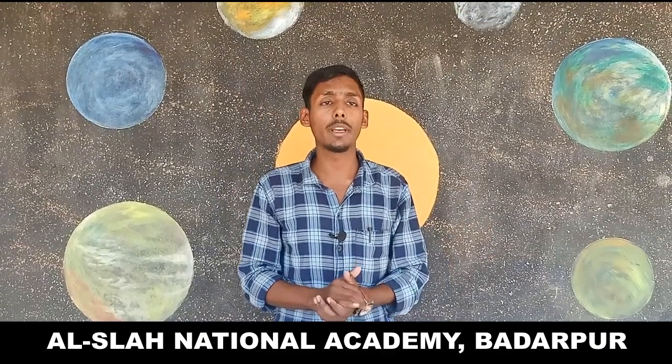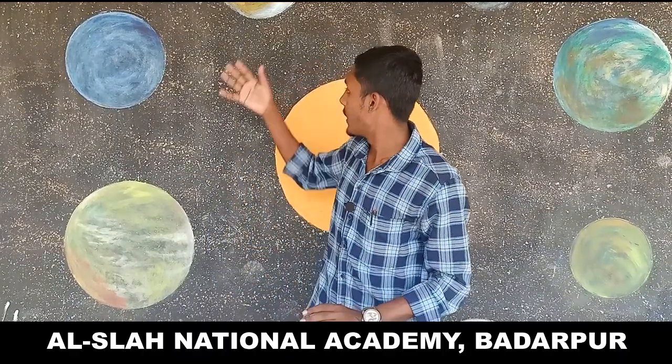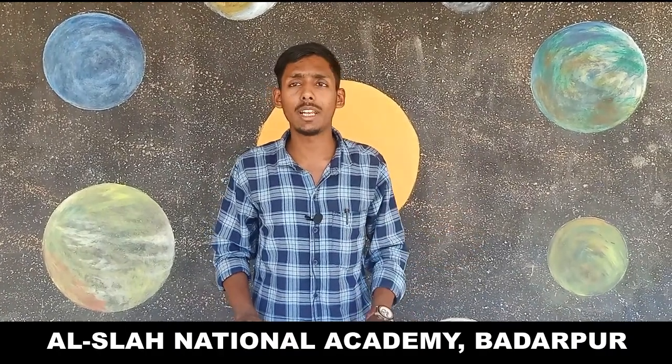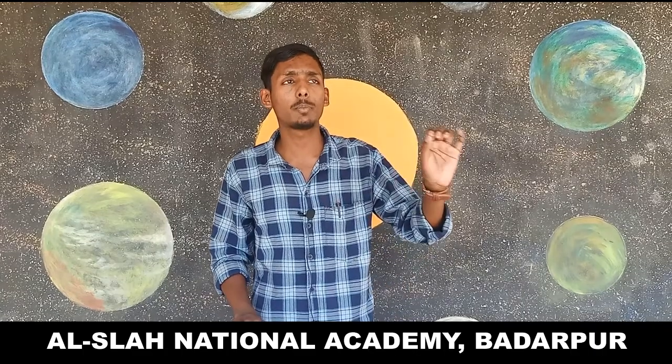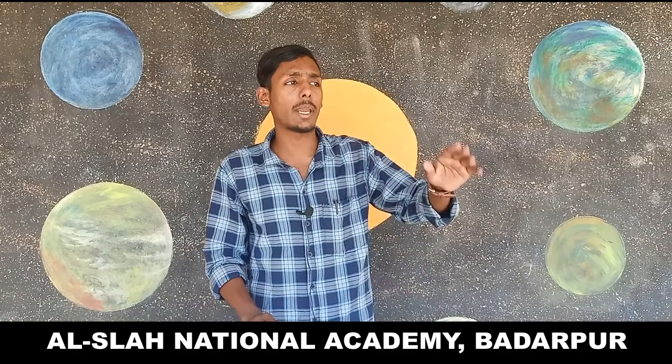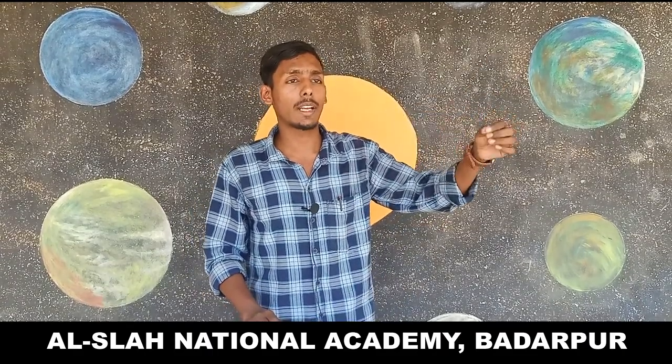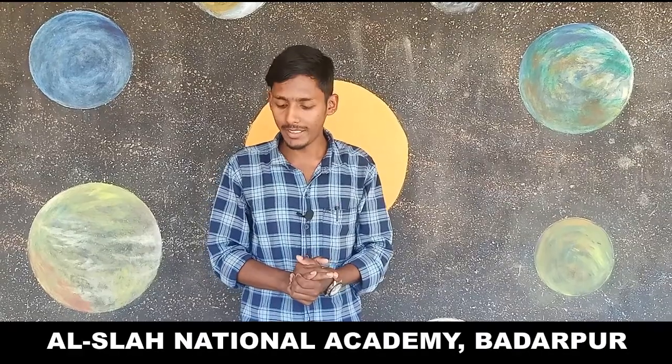Now, the solar system. In our solar system there were nine planets, but nowadays only eight planets are considered. The ninth planet, Pluto, is known as the dropped planet — it means it just diverted from its track. Besides Pluto, there are eight planets: Jupiter, Saturn, Uranus, Neptune, Earth, Venus, Mars, and Mercury.